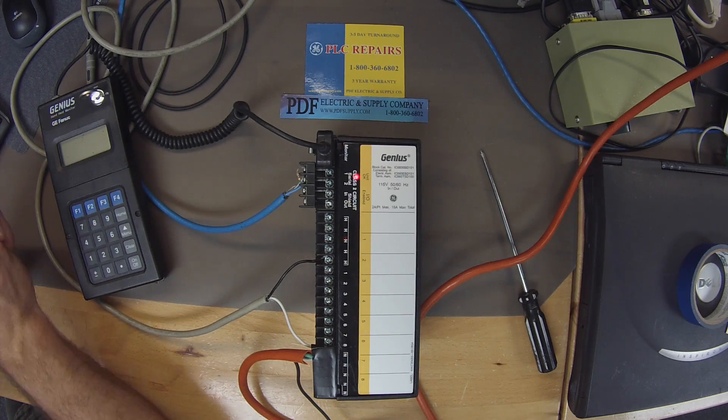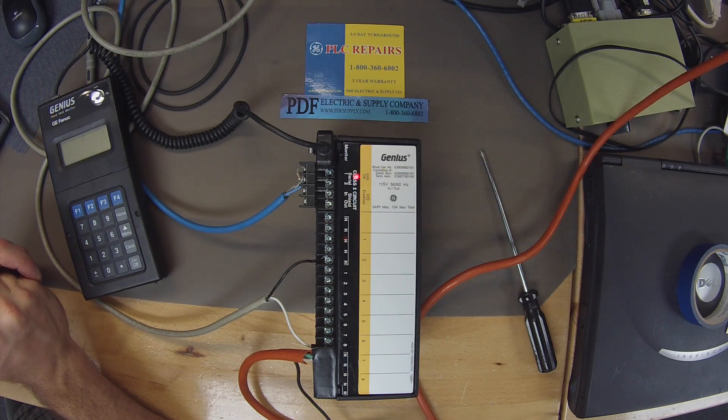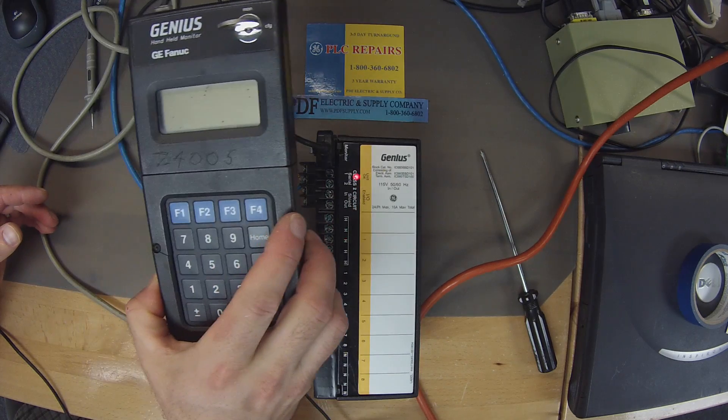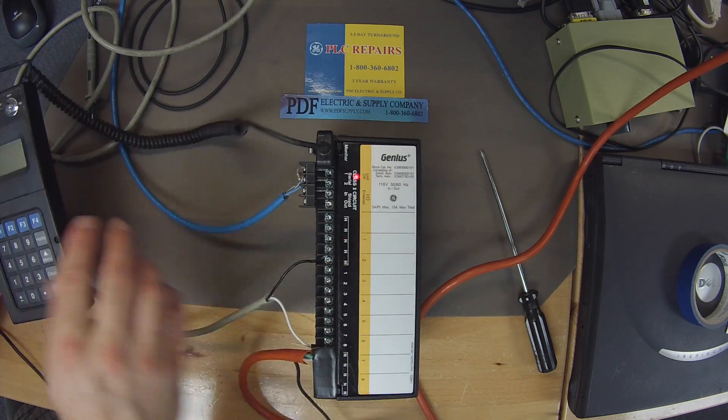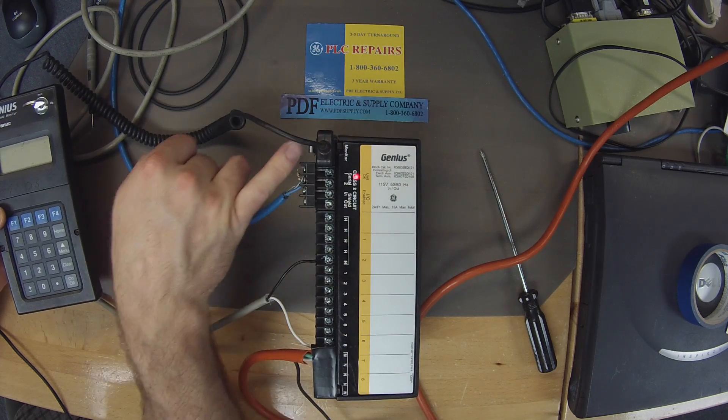A few things that I have here peripherally that you're going to need. Of course the first thing would be an IC660 HHM501 handheld monitor which I have plugged into the monitor port on the Genius Block.